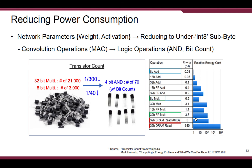We looked at how transistor count changes. 3-bit multiplication requires 21,000 transistors, 4-bit requires 3,000 transistors, and 4-bit with bit-count only requires 70 transistors. In this way, we can save energy at least 40 times, and up to 300 times.